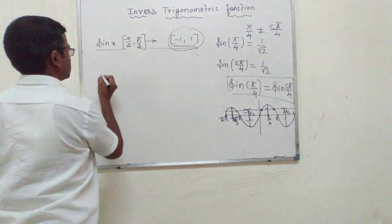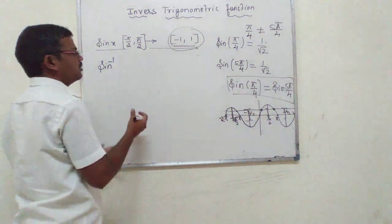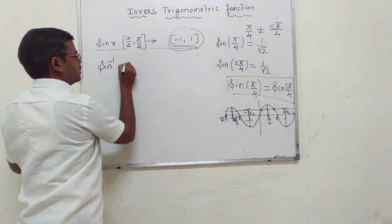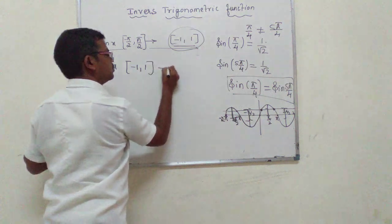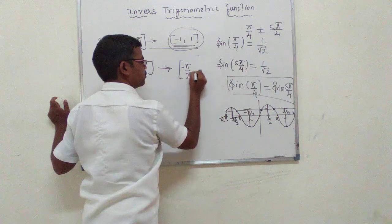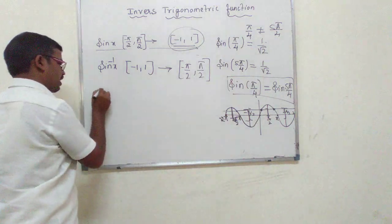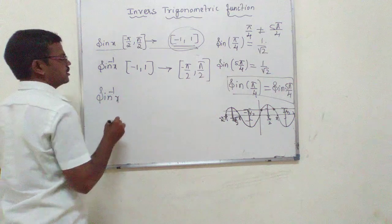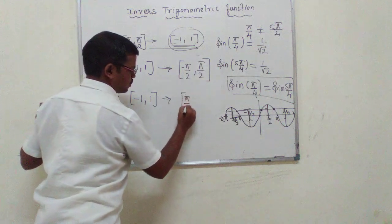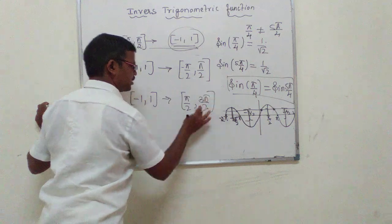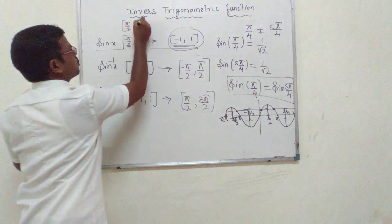So we define sin⁻¹x like this: we reverse the codomain and domain. Sin⁻¹x is a function from [-1, 1] to [-π/2, π/2]. Not only this — we have many branches. We can also write sin⁻¹ from [-1, 1] to [π/2, 3π/2], since on that interval also the function is invertible. So there are multiple branches of the inverse sine function.